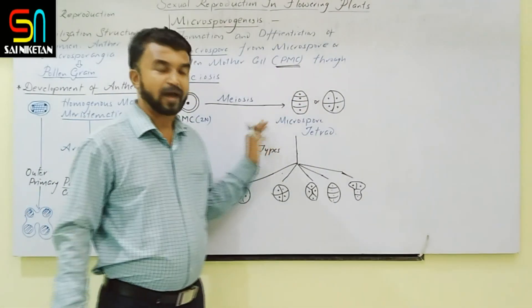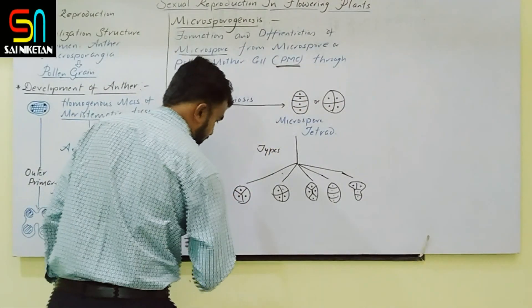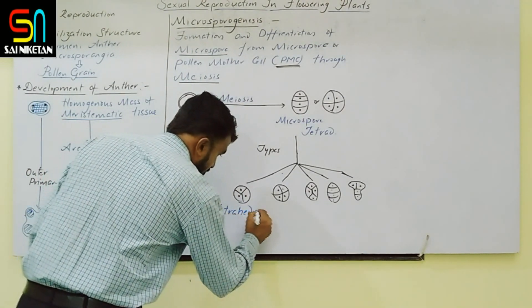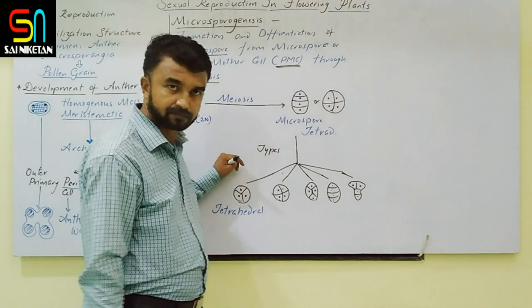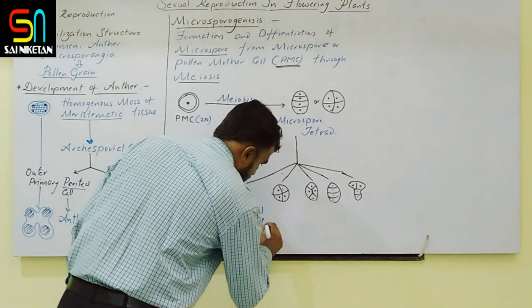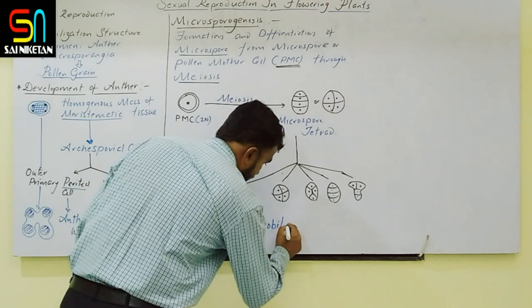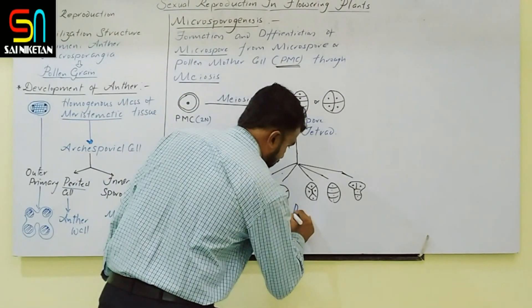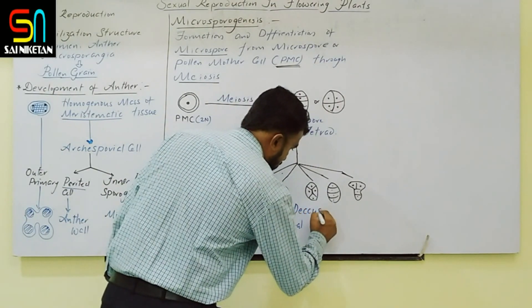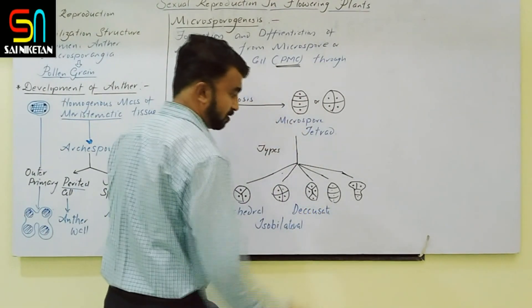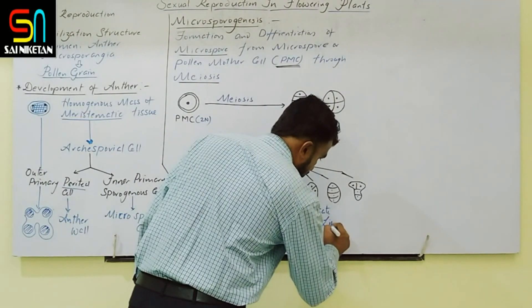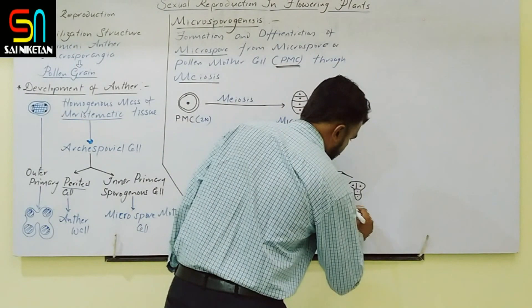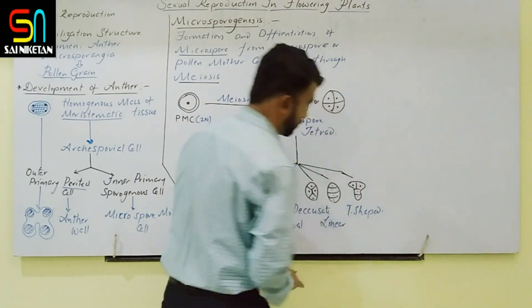The alignment of all four microspores within the tetrad may be tetrahedral, isolateral, linear, or T-shaped.